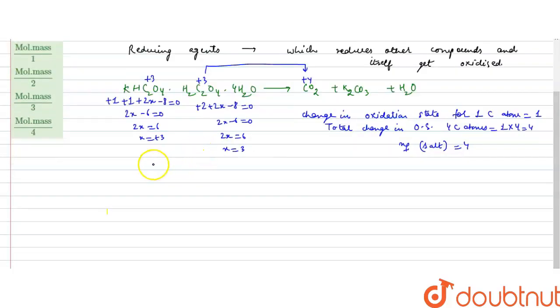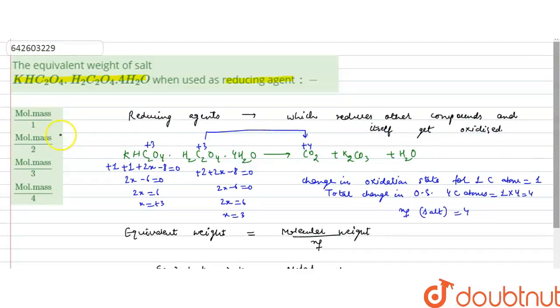Now we have to find the equivalent weight. Equivalent weight for a compound or a salt is molecular weight upon its valency factor, that is n-factor. So here the valency factor is four. So the equivalent weight would be the equivalent weight of salt would be the molar mass of salt upon four, because its n-factor is four. So the correct option is the fourth option, molar mass by four.